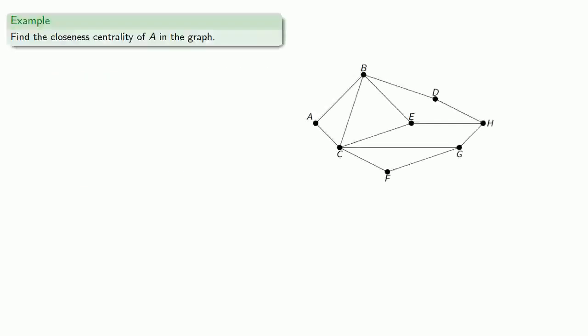So for example, let's find the closeness centrality of A in the graph. And so we want to figure out how far the rest of the network is from A. And so we can imagine expanding outward from A. This is actually Dijkstra's algorithm. So if I'm at A, there are two nodes, B and C, at distance 1.